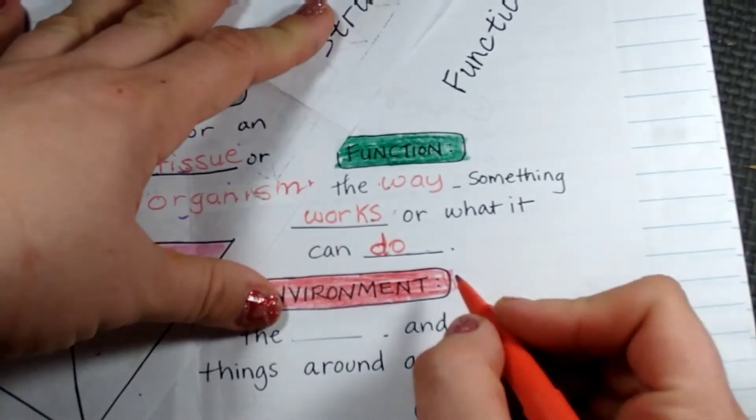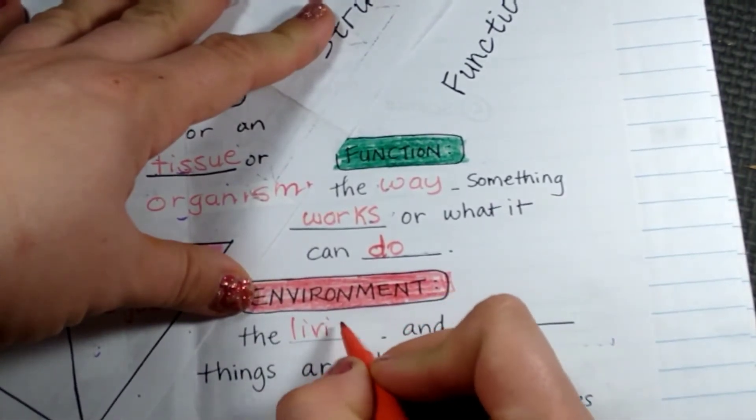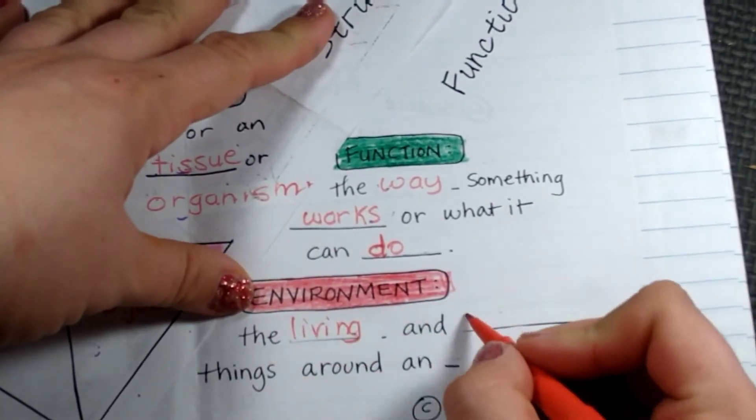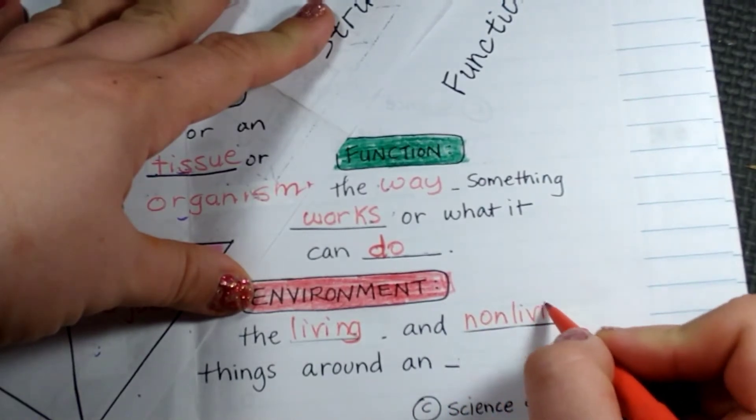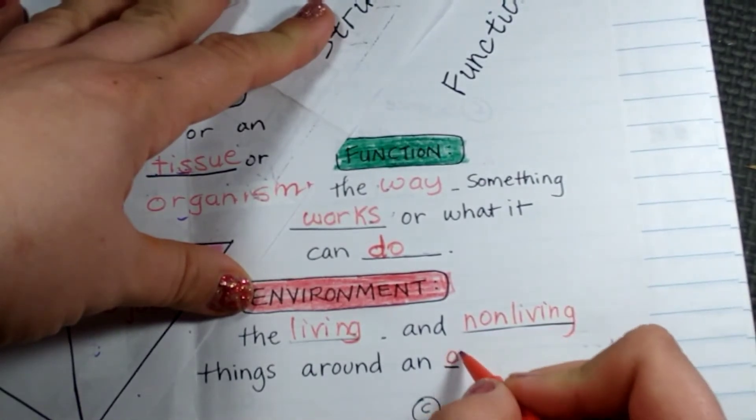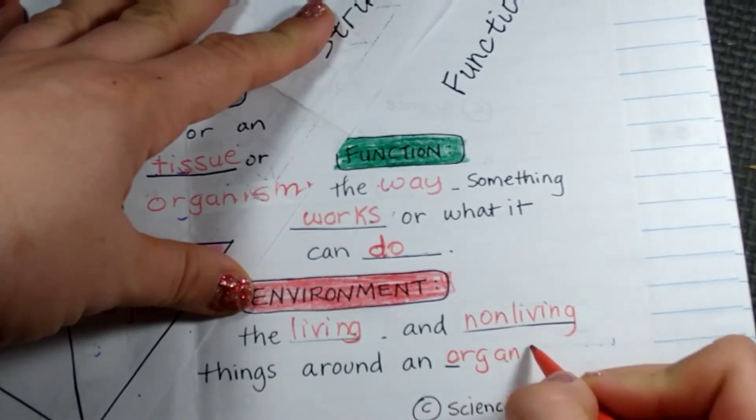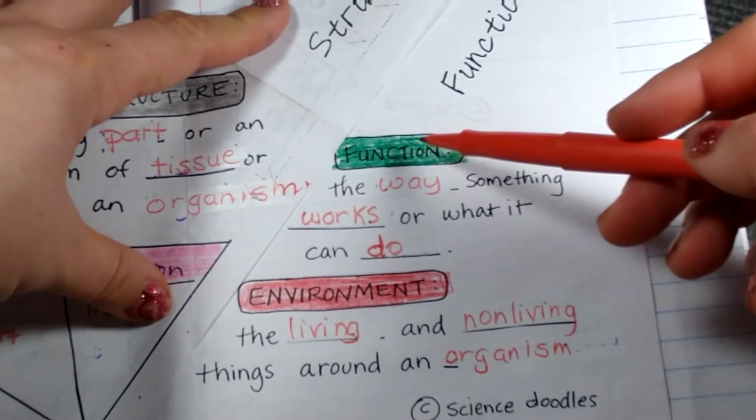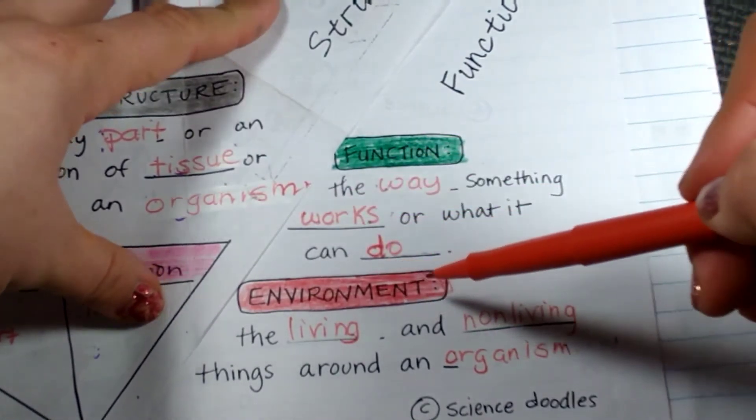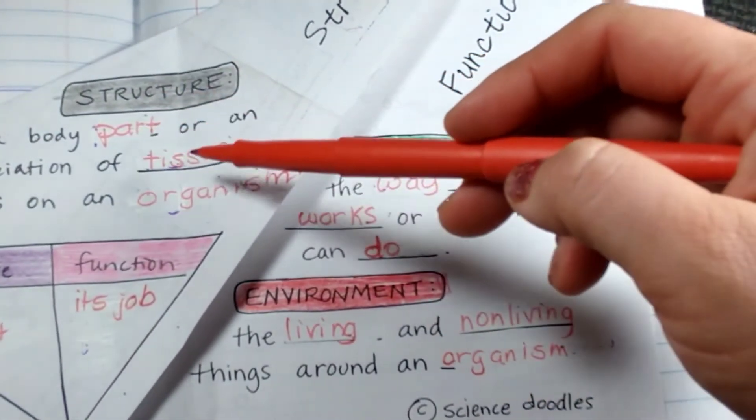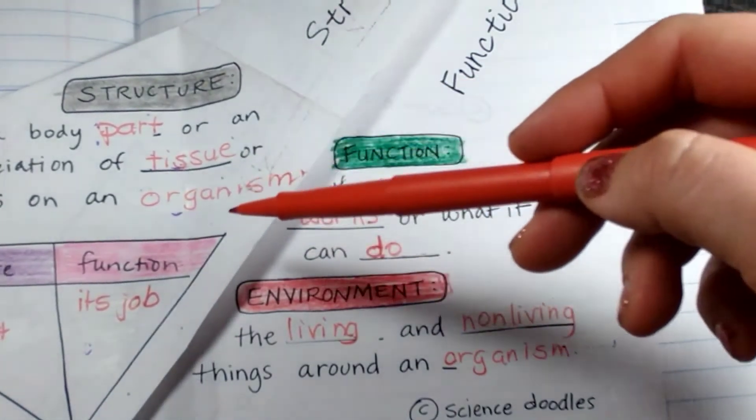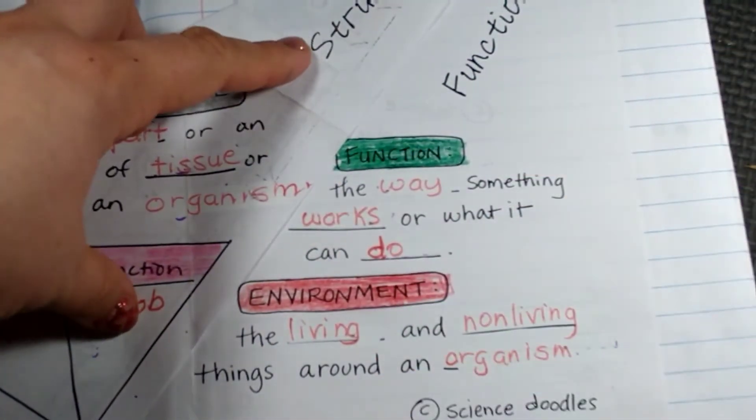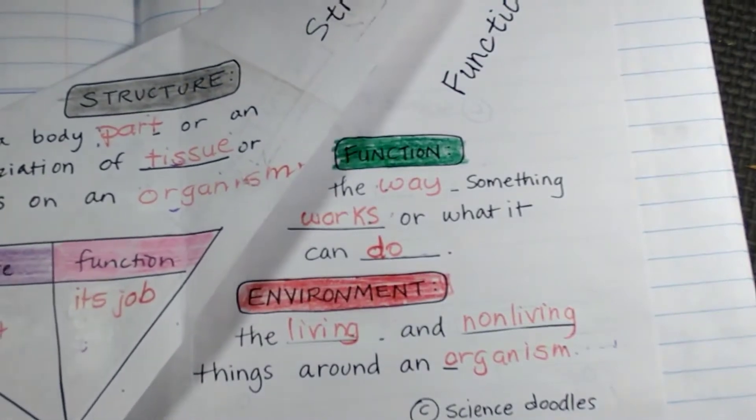An environment is the living and non-living things living around an organism. So we have the functions, ways something works or what it can do. The structures, which is a body part, tissue or body parts on an organism. And we have an environment, which is the living and non-living things around an organism.